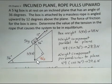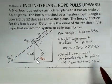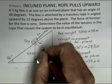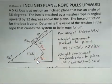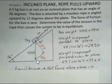Now, the weight component perpendicular can also be calculated here. 49 and cosine 36 degrees. I'll put that up here. That's just kind of for information. It's not needed in this problem because there's no friction. We don't have to do a calculation for the normal force.